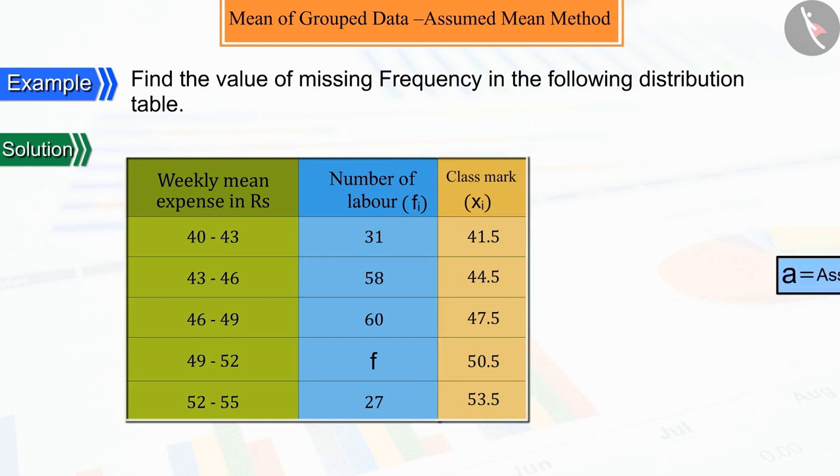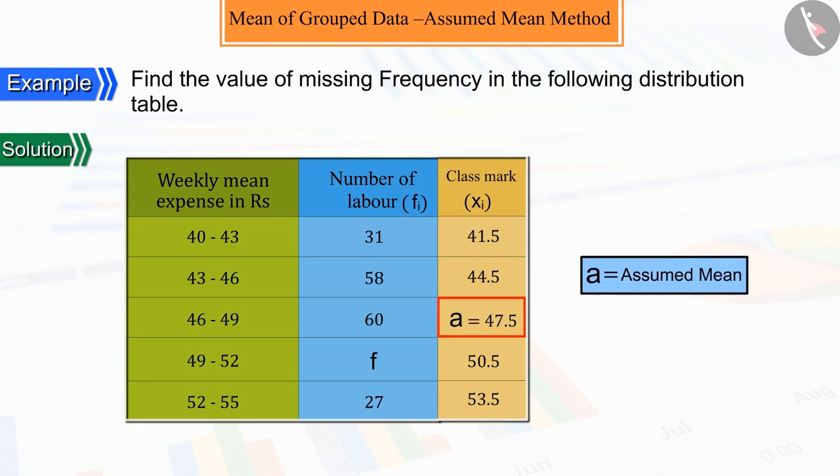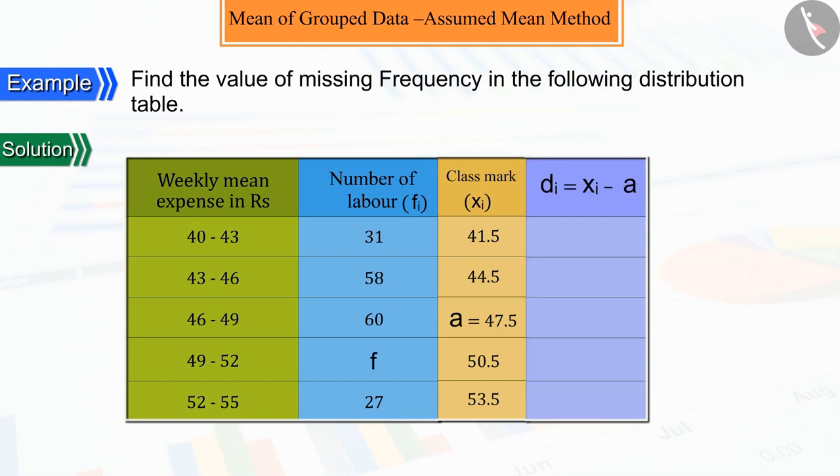Suppose here the assumed mean, that is A, is equal to 47.5, with the help of which we represent A and the difference DI between each XI.